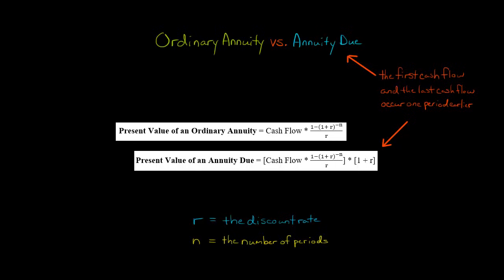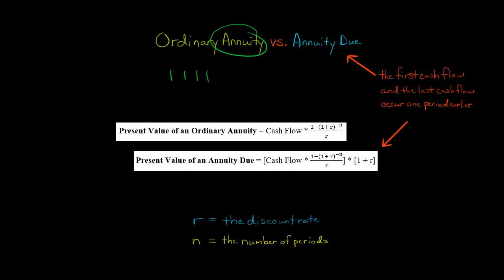In this video, we're going to discuss the difference between an ordinary annuity and an annuity due. In each case, we're dealing with an annuity, which is just a stream of cash flows over time. The difference is that with an annuity due, the very first cash flow occurs immediately, and the last cash flow occurs one period earlier than it would for the ordinary annuity.